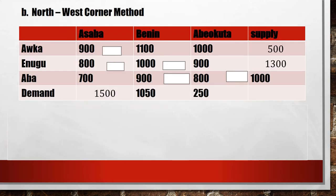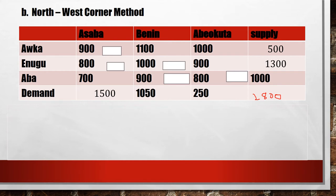Now let's solve the second part of the problem using the northwest corner method to find the total cost of transportation. Remember, the sum of the supply values equals the sum of the demand values. I've done my substitutions — replacing 200 + x with 500 — so checking both the supply and demand totals gives 2800. Now, to apply the northwest corner method, you start from the upper left of the matrix.